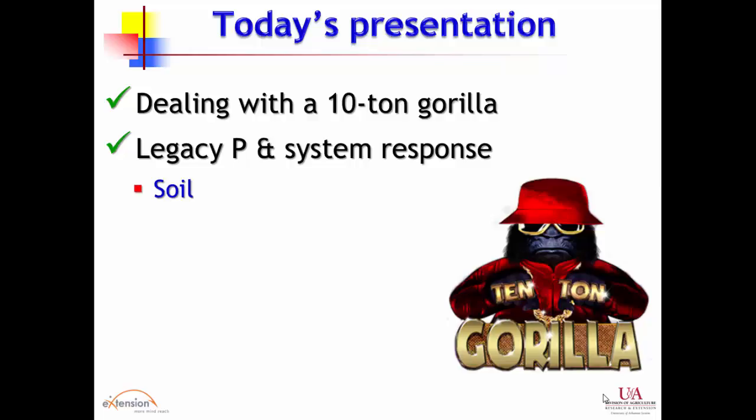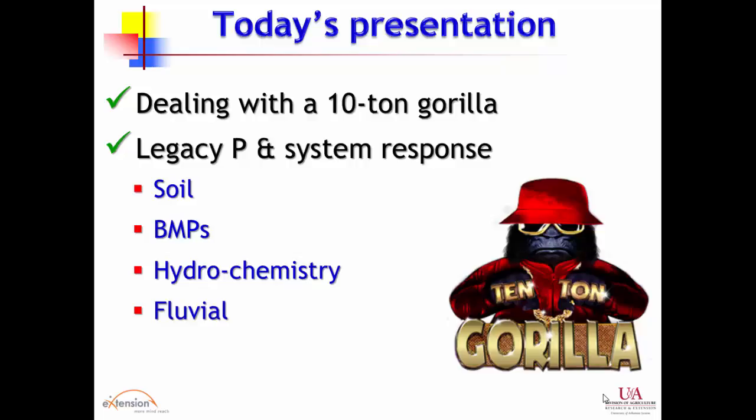We look at four main areas. First, soils accumulate phosphorus much more quickly than they draw it down. Second, BMPs take time to implement — establishing a buffer won't work overnight. Third, hydrochemistry: water pathways are lengthy and highly variable. Fourth, phosphorus already in rivers, streams, and lakes is a growing concern we're increasingly recognizing.